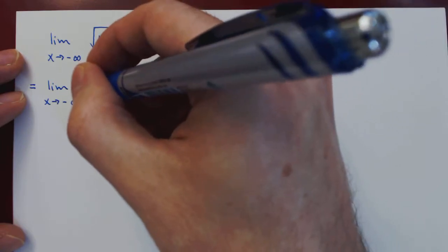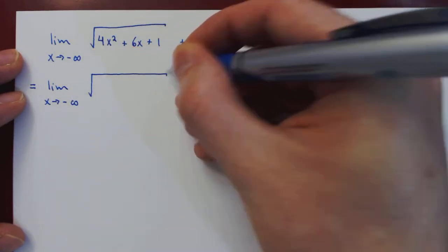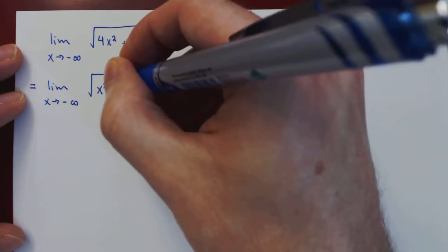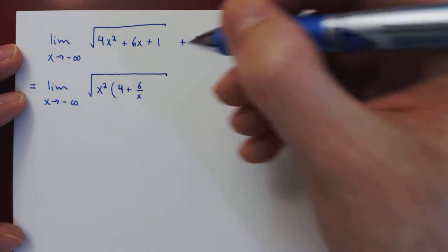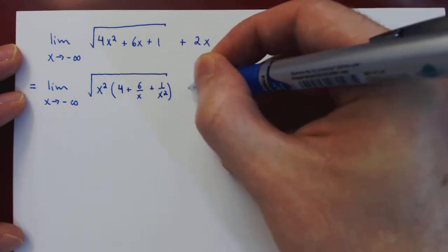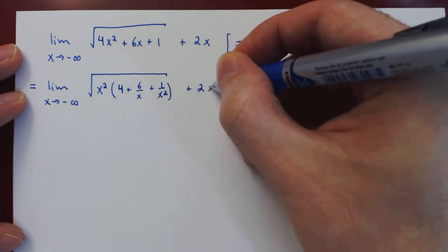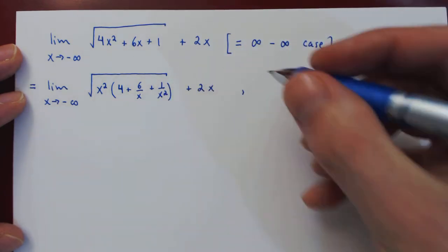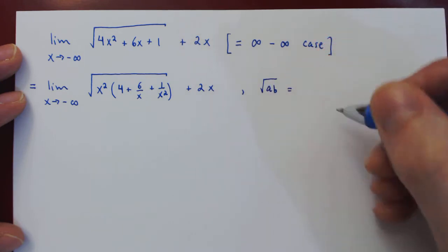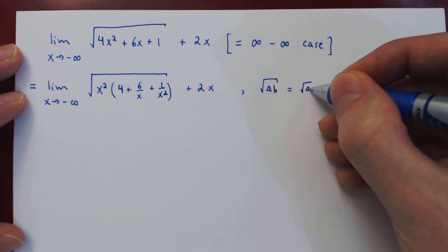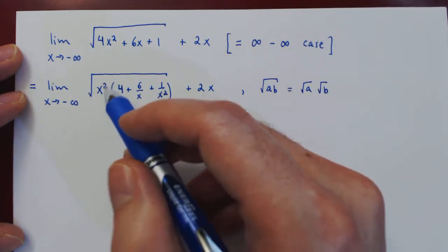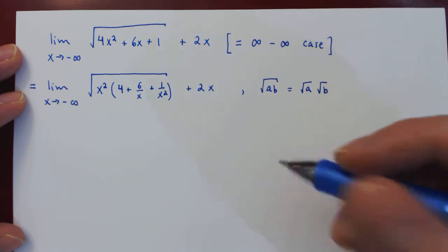So we factor from within the square root, factoring x². Then we're left with 4 + 6/x + 1/x², then plus 2x. Now we have the root over a product, so we'll use the basic property that root of ab when a and b are both positive is the root of a times the root of b.